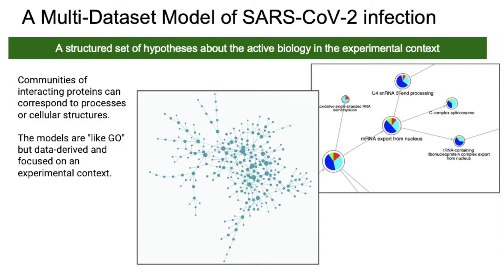In a recent collaboration, we used that data in combination with three other datasets and a large public network of known protein interactions to generate a hierarchical model of the viral infection. This is a network describing clusters within clusters — each one corresponds to a set of interacting proteins determined computationally. You can see the nodes are displayed as pie charts, where each pie slice corresponds to one of the four datasets, and the size of the pie is related to the number of proteins in the cluster that are hits in that data. The dark blue corresponds to the Gordon et al. data.